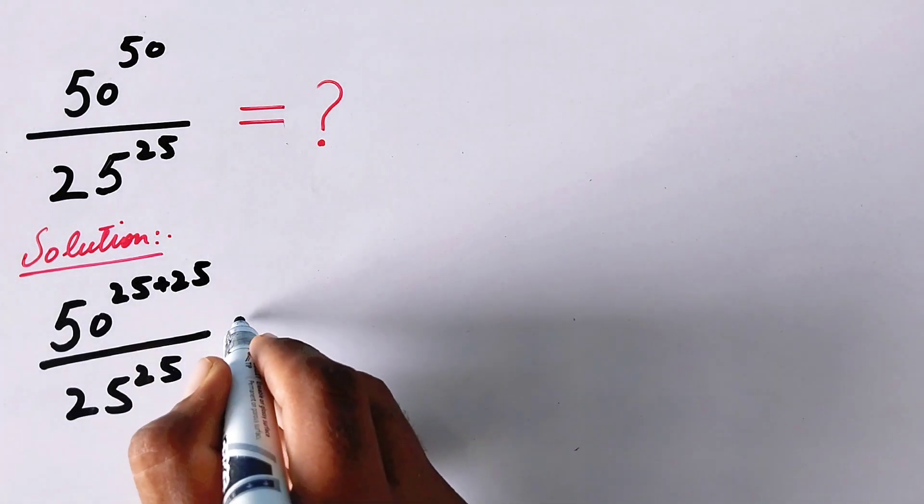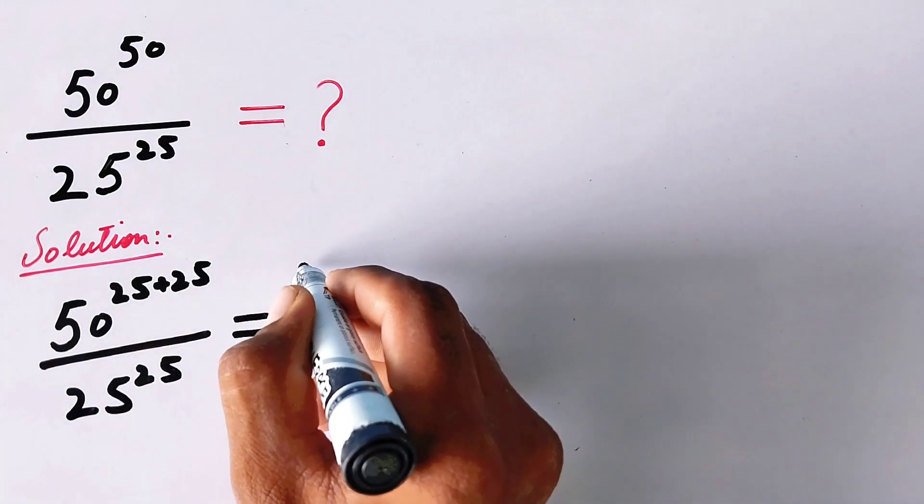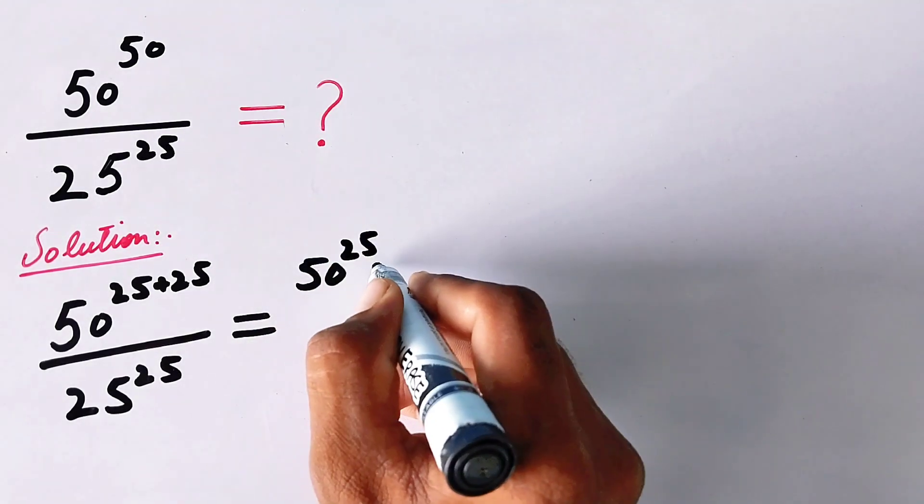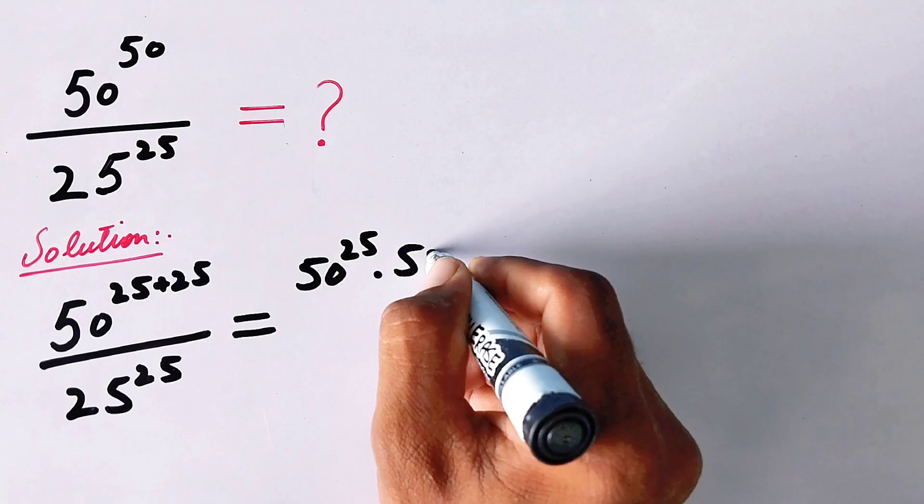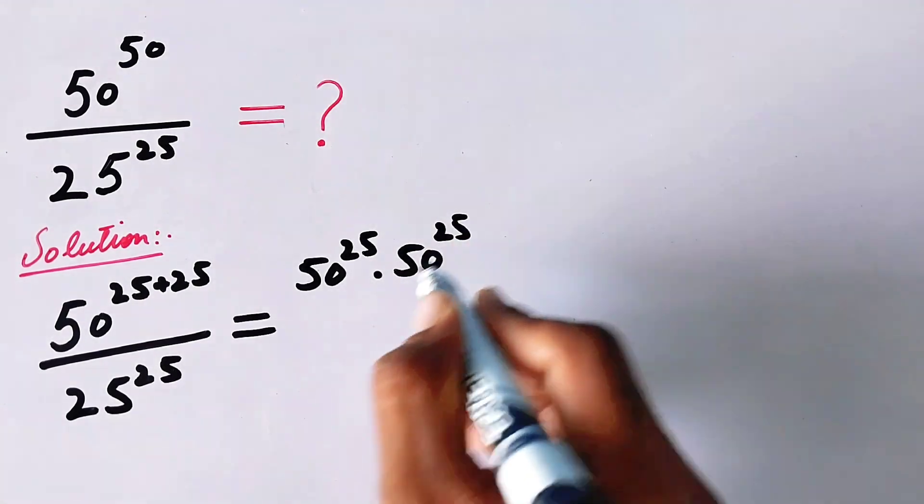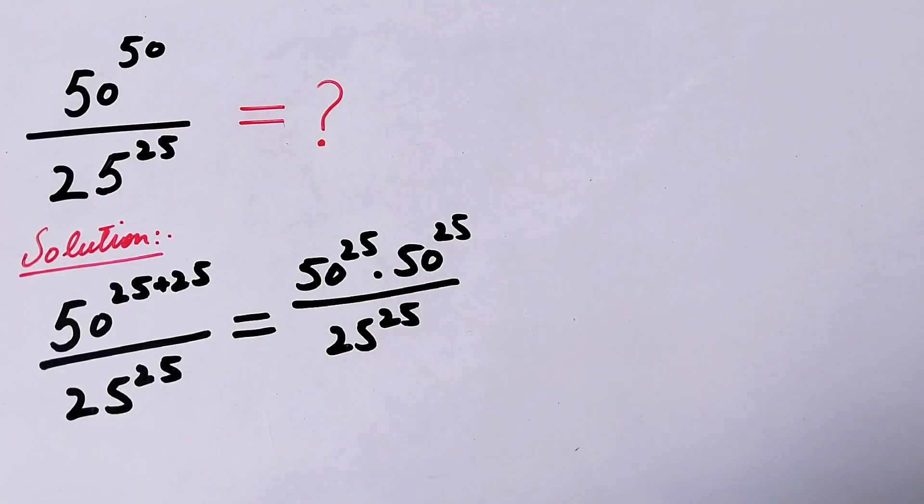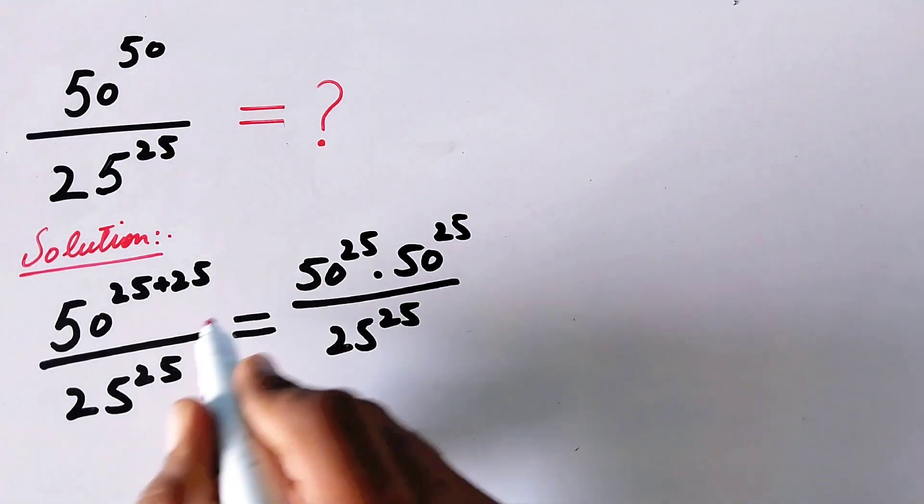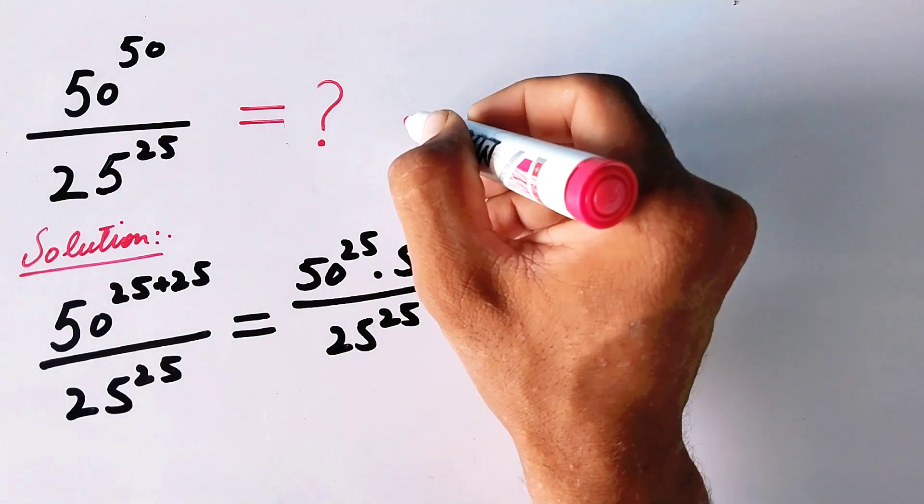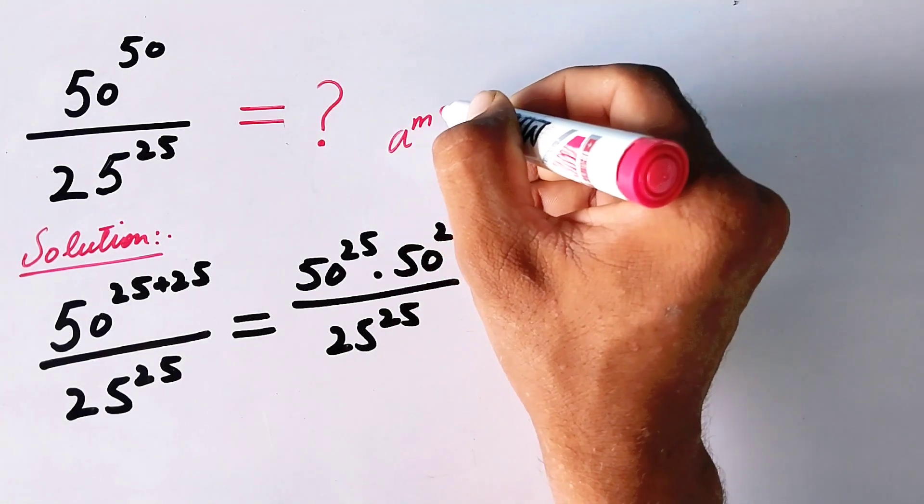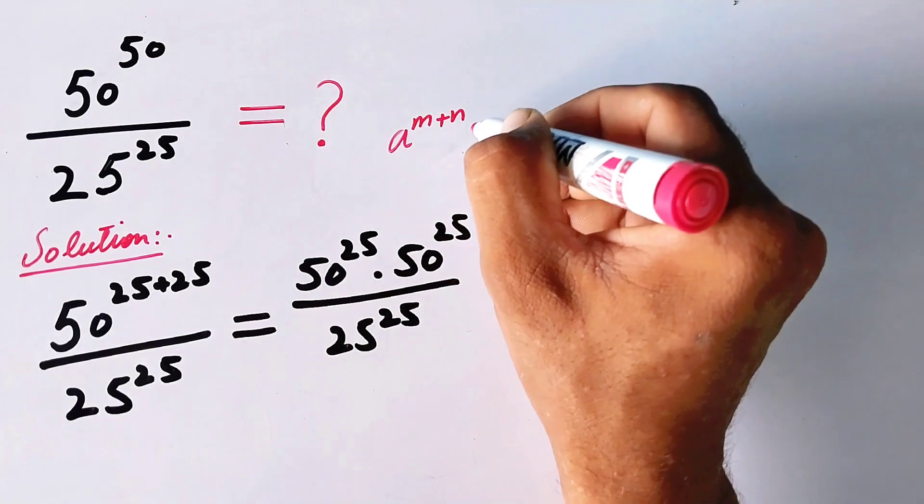We can write it as 50^25 · 50^25 / 25^25. We have written this form according to the exponential formula: a^(m+n) = a^m · a^n.